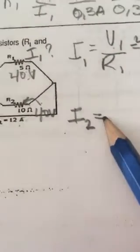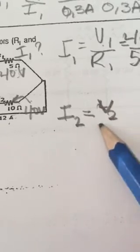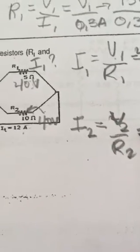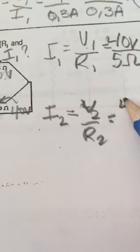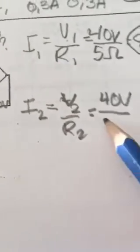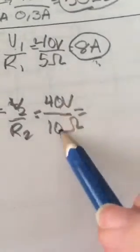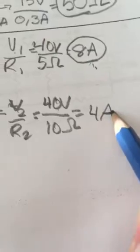I2 equals V2 divided by R2. V2 is 40 volts because in parallel the voltage is the same, and R2 is 10 ohms. 40 divided by 10 is 4 amps.